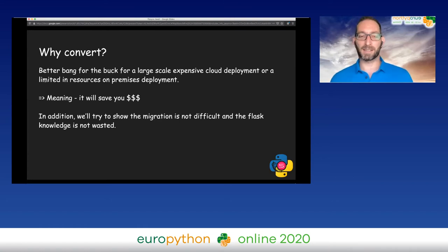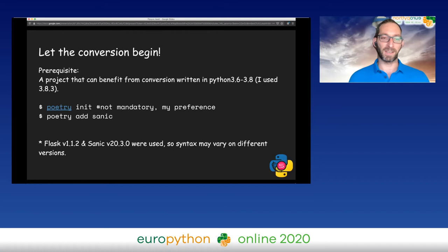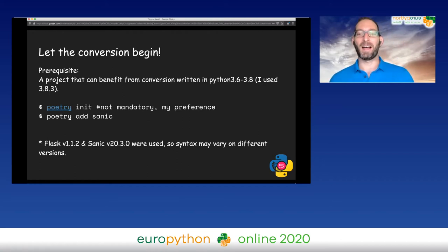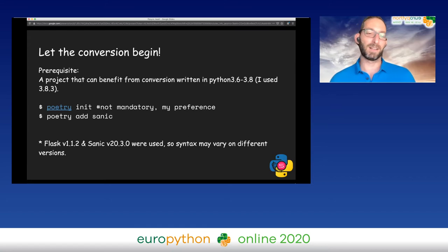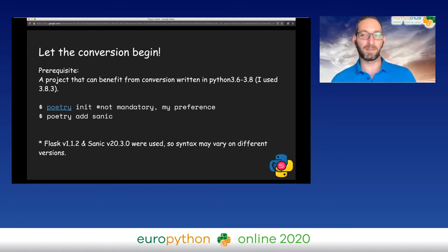In addition, the migration is not difficult and all the Flask knowledge accumulated so far is not wasted. So let the conversion begin. As a prerequisite, we need a project that could benefit from the conversion, meaning it mostly does IO and is written in Python between version 3.6 and 3.8. I used Python 3.8. I also used Poetry as a dependency manager, Flask version 1.1.2 and Sanic version 20.3.0.